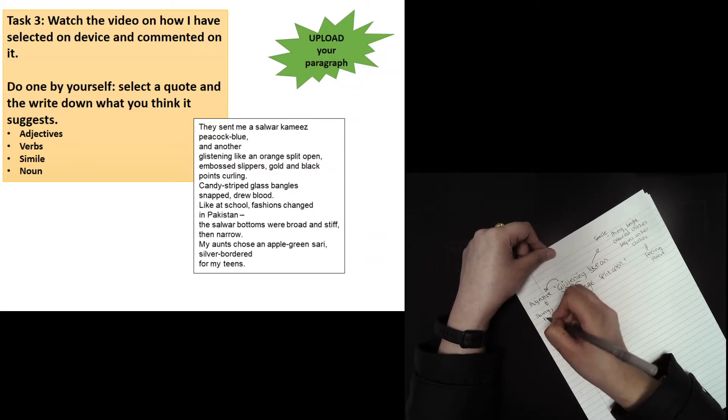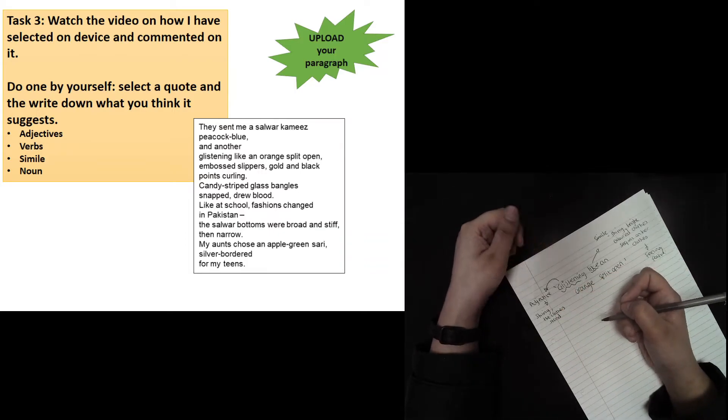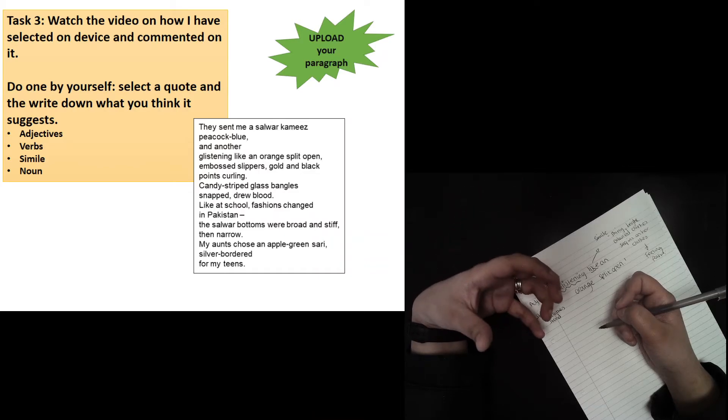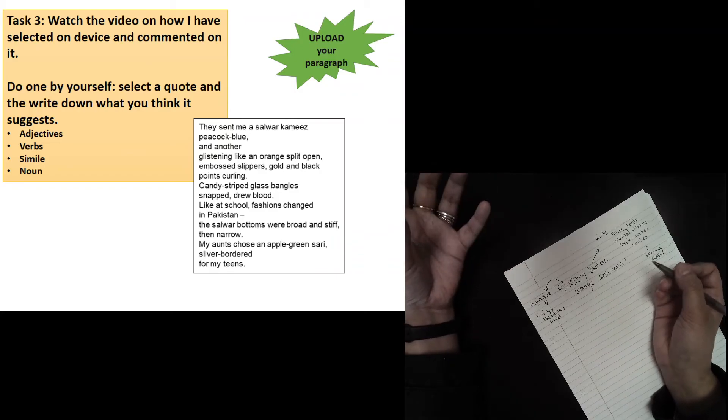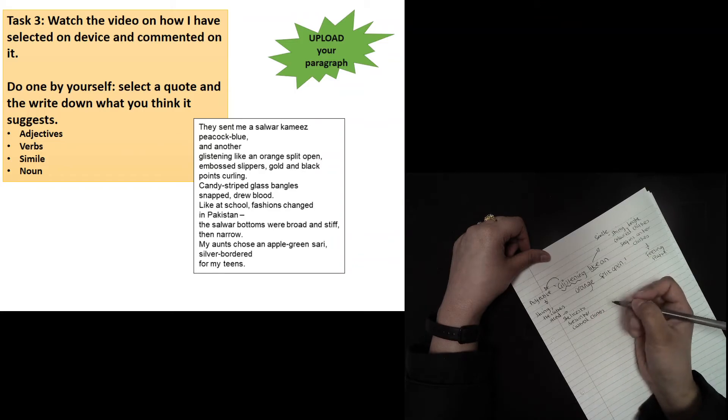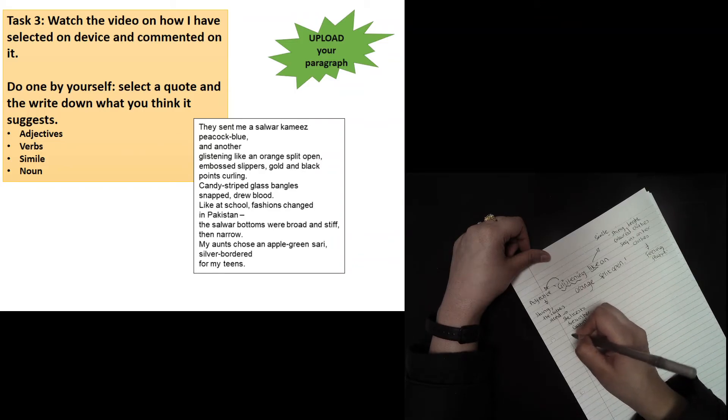The clothes stand out, and if you think about the connotation behind the word 'glistening,' it's quite positive because it means you want to be wearing them, you want to be around that thing—and here it's the clothes. So it's glistening for her, which may suggest she likes to dress in her cultural clothes and that they visually appeal to her.